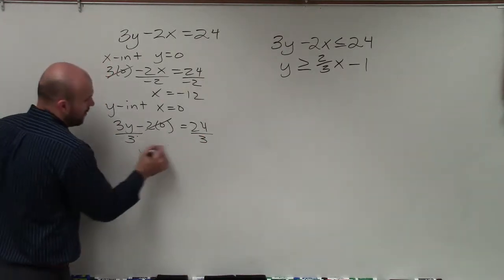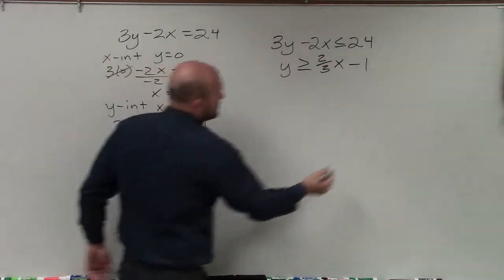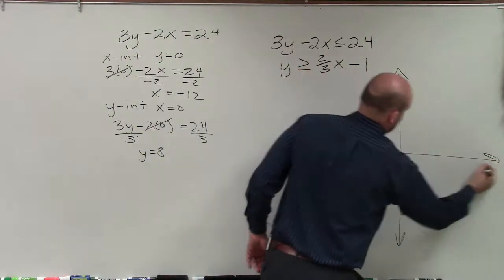Now notice, again, for both of these points, y equals 8, x equals 0. x equals negative 12, y equals 0. So I can go and plot these two points on my axis here.